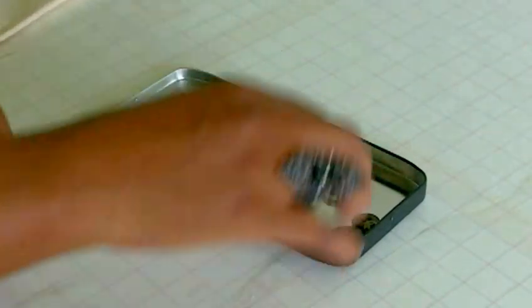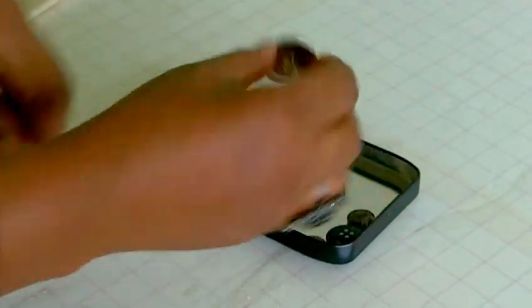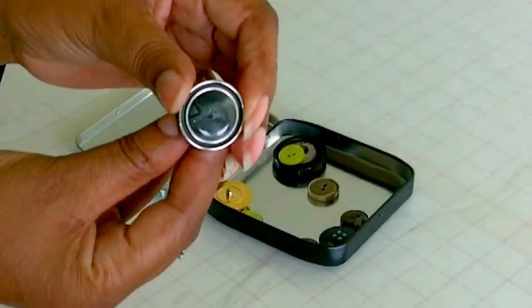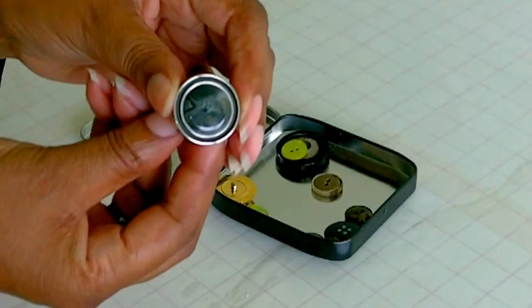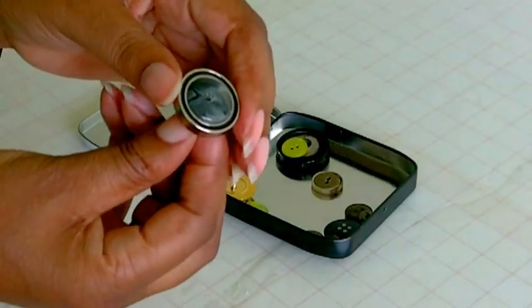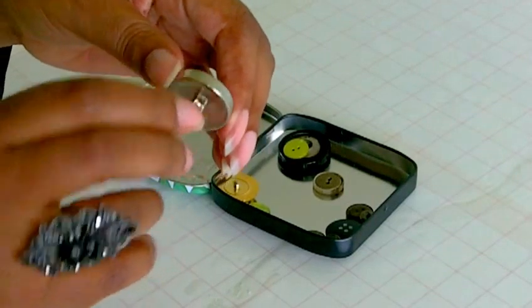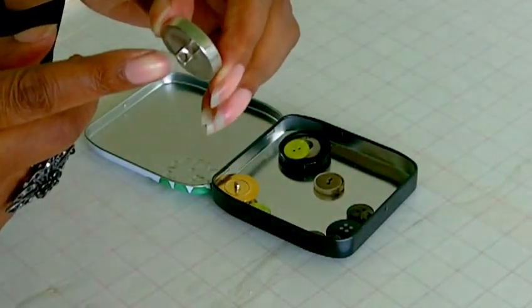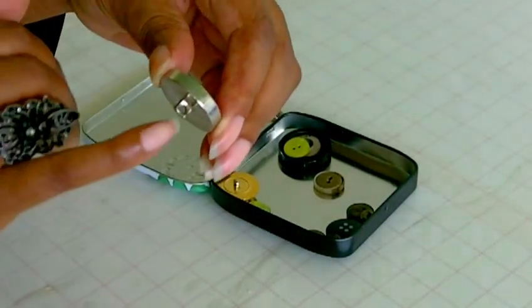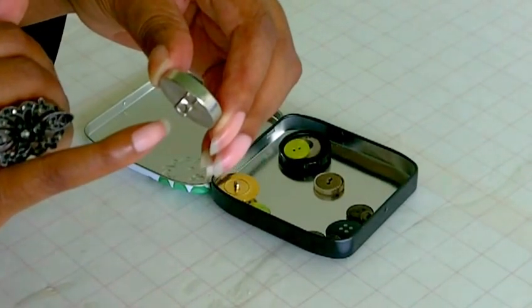And the next one is what you call a shank button. The reason why is because in order to attach this button to a garment, the actual holes at the bottom in the stem. And so that's where you thread the needle through in order to attach it to the garment.